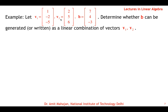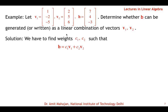Example: Let V1 and V2 be vectors in R3, and let B = [7, 4, −3] also in R3. Determine whether B can be written as a linear combination of V1 and V2. We must find constants C1 and C2 such that B = C1·V1 + C2·V2. If such C1, C2 exist, then B is a linear combination of V1 and V2; otherwise it is not.